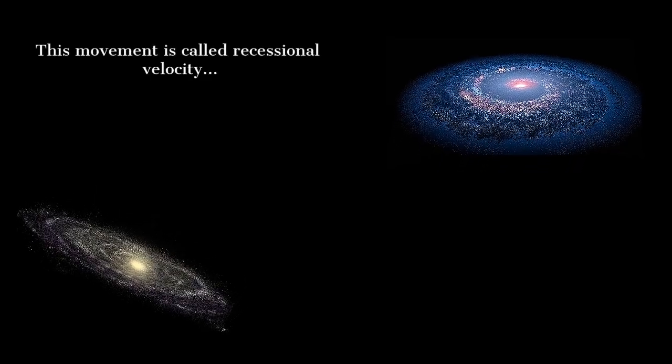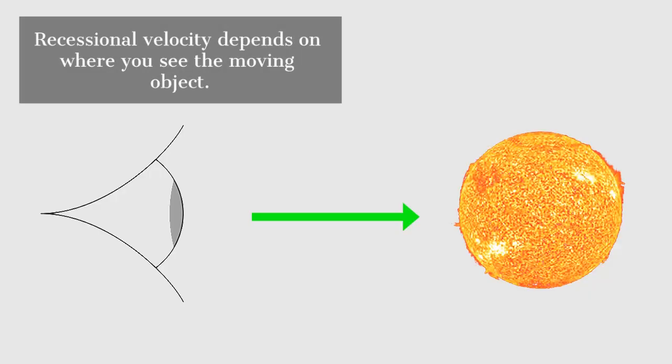This movement speed is called recessional velocity and is viewer-dependent, meaning the recessional velocity of an object is dependent on from where you see that object.